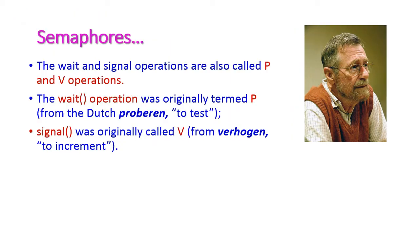Wait and signal are otherwise called P and V operations. P is for the wait operation and V is for the signal operation.